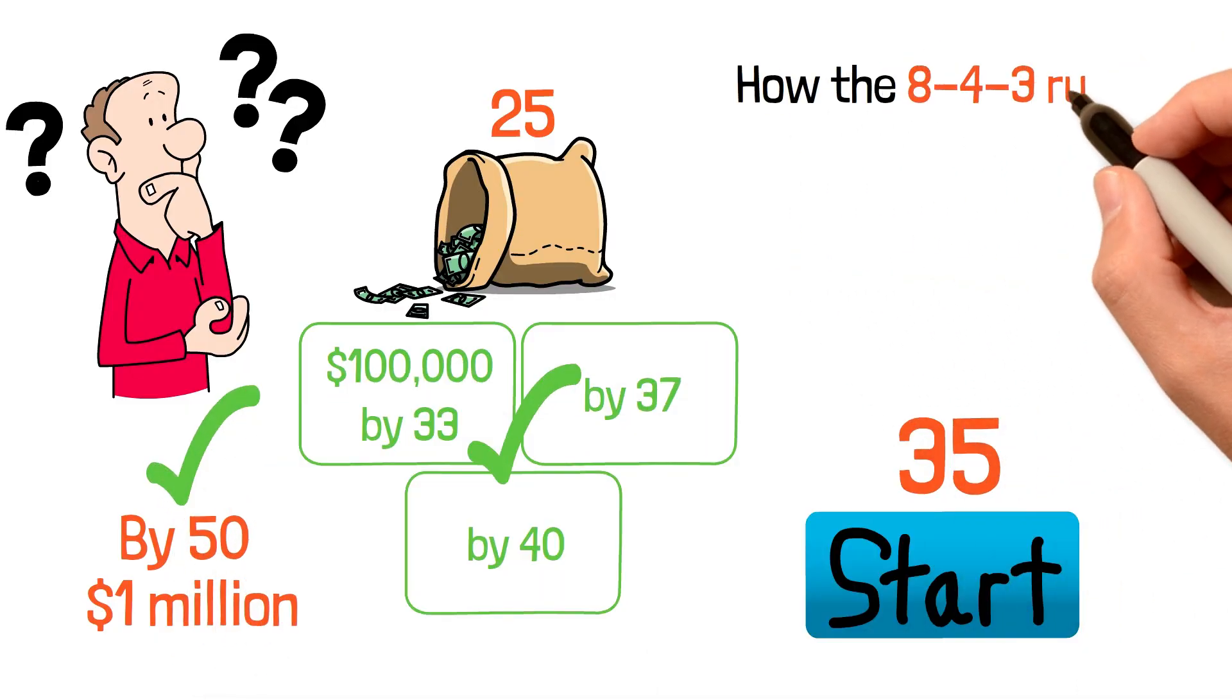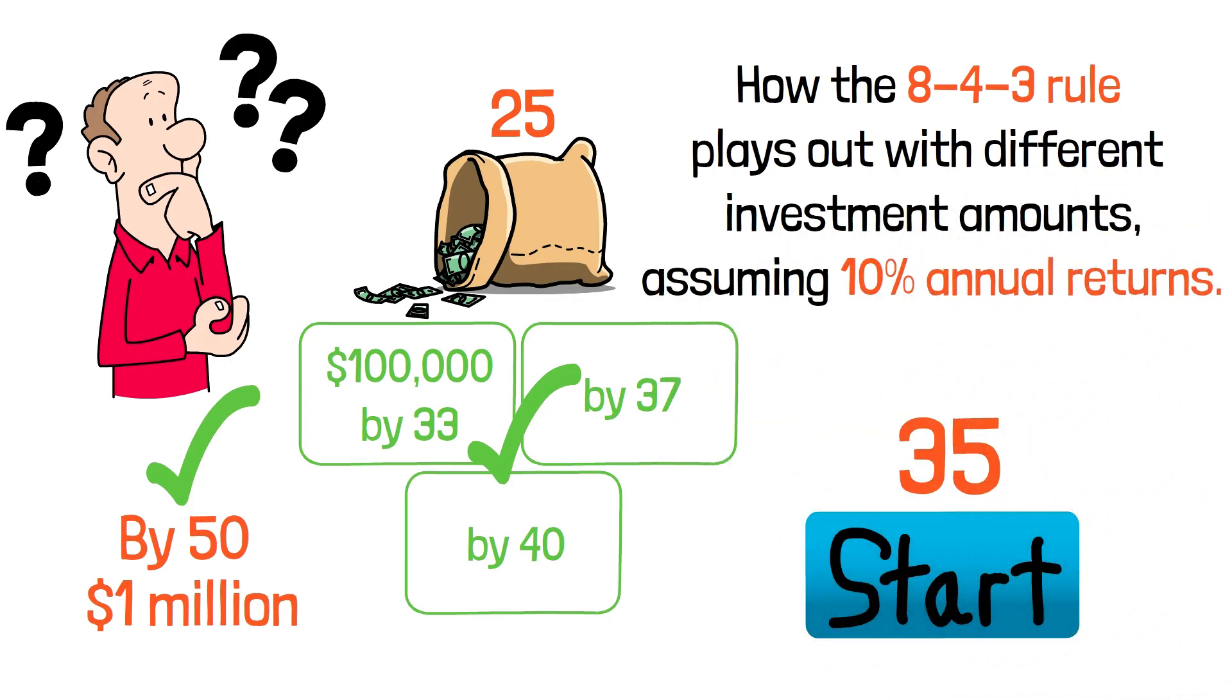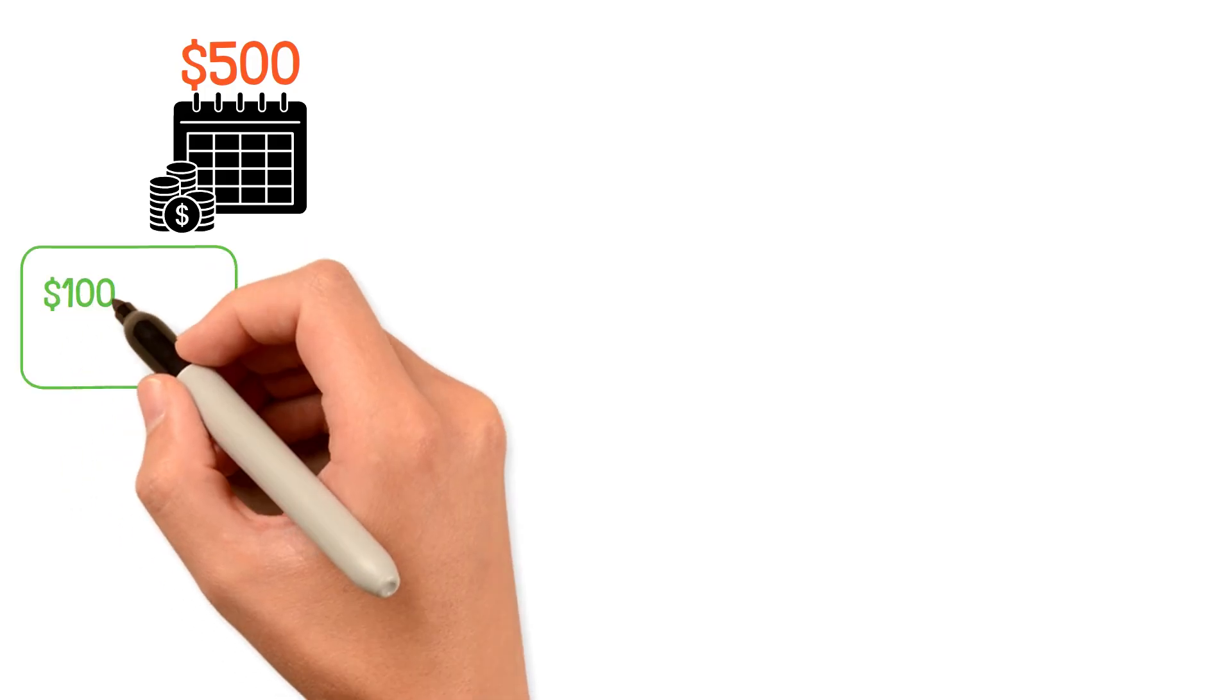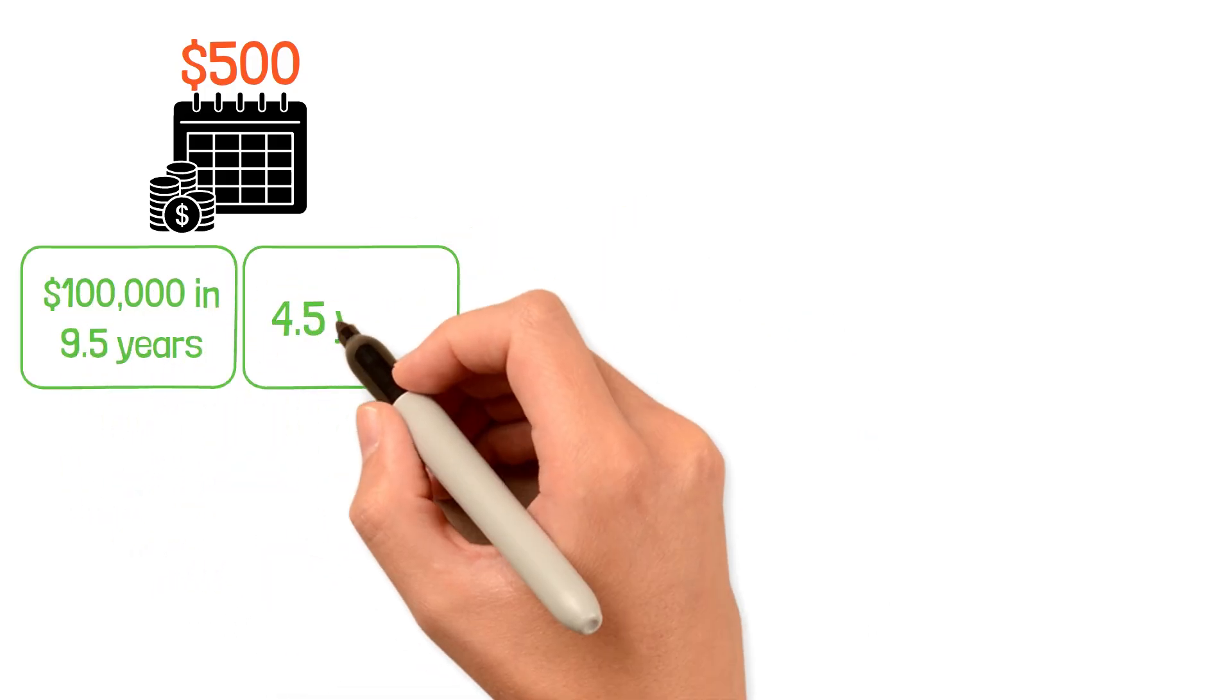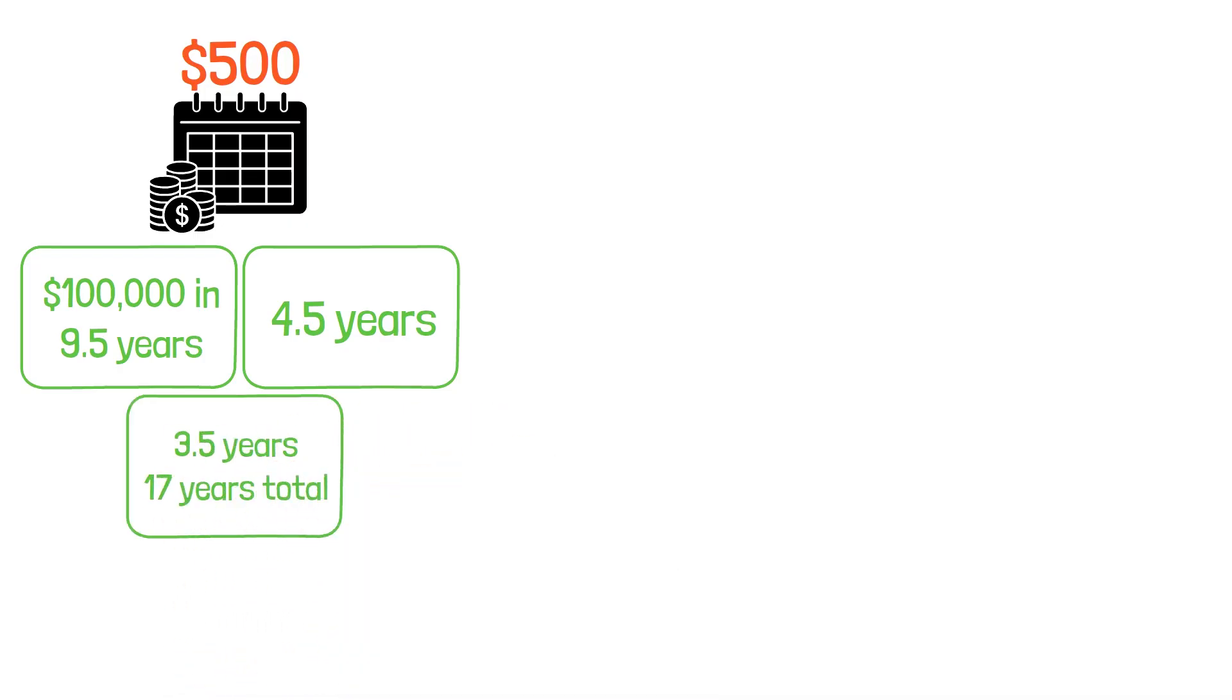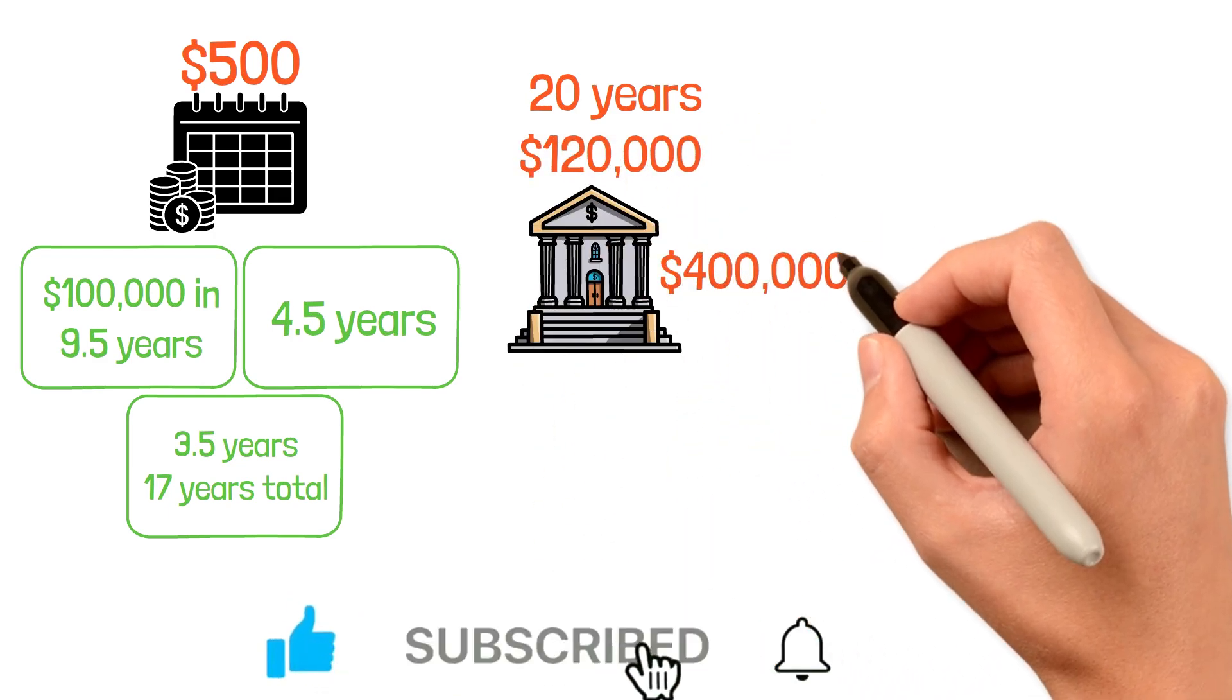Let's look at how the 8-4-3 rule plays out with different investment amounts, assuming 10% annual returns. With a $500 monthly investment, you accumulate your first $100,000 in 9.5 years, the second in 4.5 years, and the third in 3.5 years or 17 years total. After 20 years, you've contributed $120,000, but your account is worth $400,000. That's $280,000 in compound growth.